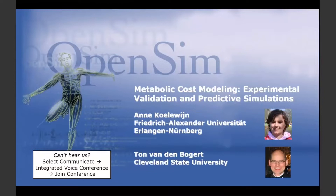I'd like to introduce our speakers. Anne Cullen is an assistant professor at FAU Erlangen-Nürnberg. Previously, she was a postdoc in the Bio-ROB group at EPFL. She received a doctor of engineering degree in chemical engineering from Cleveland State University, where she worked in the Parker Hannifin Laboratory for Human Motion and Control under the supervision of our second speaker, Tom van den Bogert. Tom is professor at Cleveland State University, received a PhD in veterinary science from Utrecht University in the Netherlands, and served as president of the Society of Biomechanics.